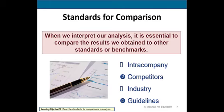Then we're looking at competitors. For a competitor, they provide standards for comparisons. Coca-Cola's profit margin can be compared to PepsiCo's profit margin. Industry statistics provide standards of comparisons. Intel's profit margin can be compared to its industry's profit margin.